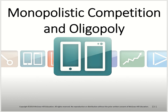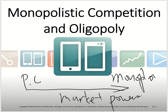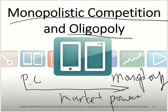Nobody has any market power in perfect competition. If you look at a scale with market power measured, perfect competition has the least market power and monopoly has the most. Monopolistic competition and oligopoly are somewhere in between — the firms in these market structures have some market power, but not absolute market power.